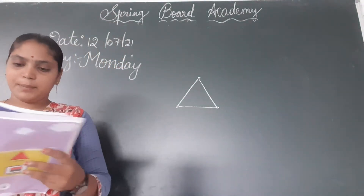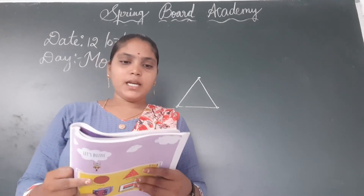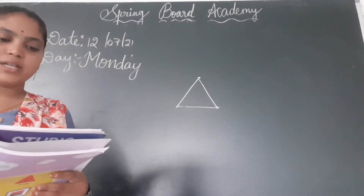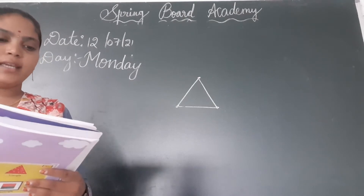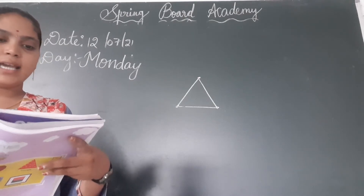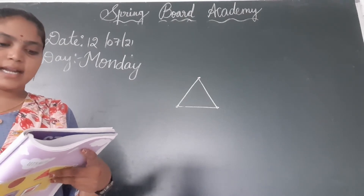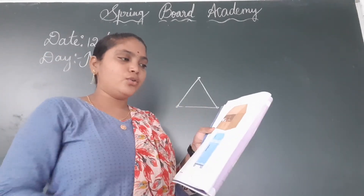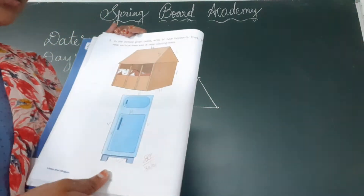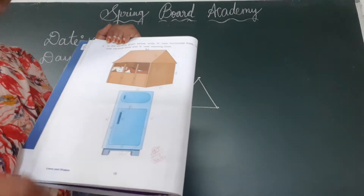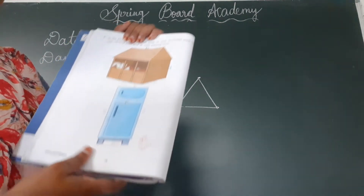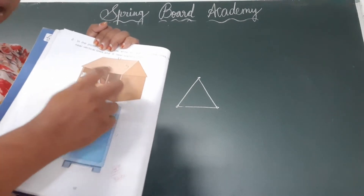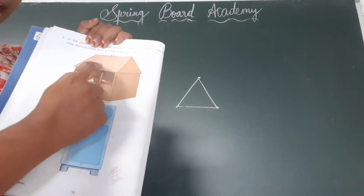Next, in page number 18. In the picture given below, write H near the horizontal lines and V near the vertical lines and S near the slanting lines. We are given two pictures, children. You have to observe the lines and write H near the horizontal line. What line is this? Yes, this is a horizontal line.